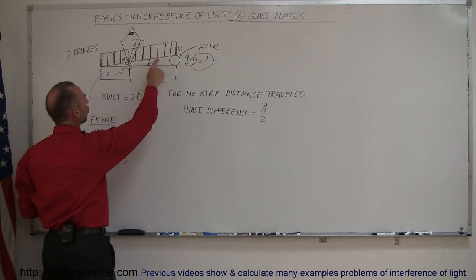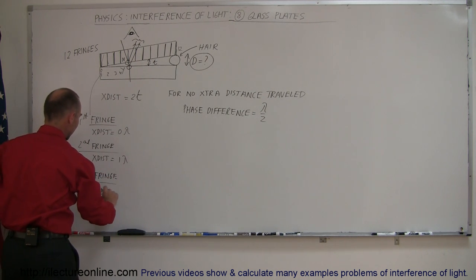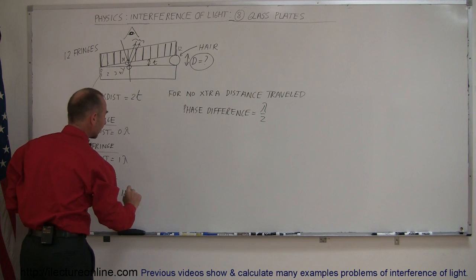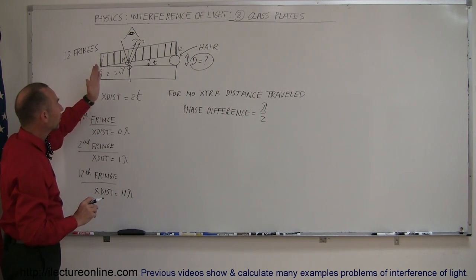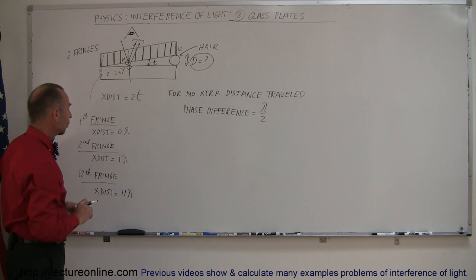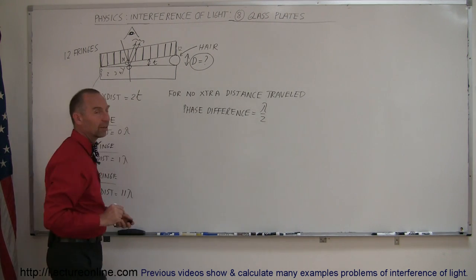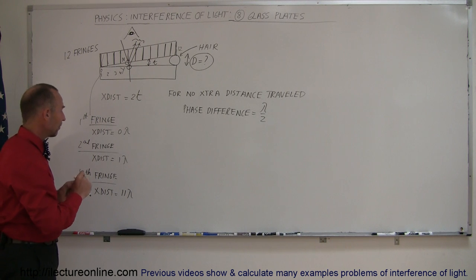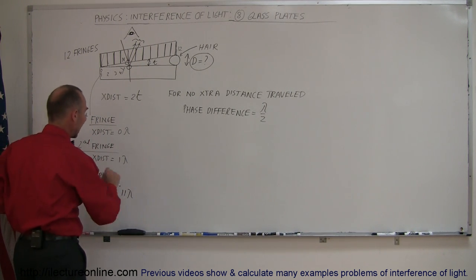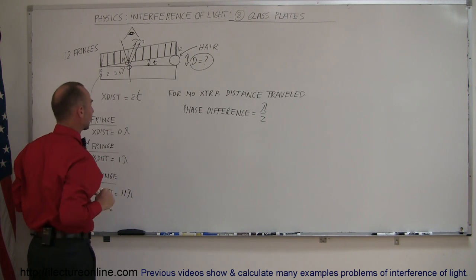When we go to the 12th fringe, the extra distance traveled at the 12th fringe must be equal to 11 lambdas. Each time we see another fringe, the extra distance traveled is an additional wavelength. And if we then add the additional phase difference of lambda over 2 from the phase shift, the extra distance has the effect of being 11 and a half wavelengths, and therefore you'll see destructive interference.